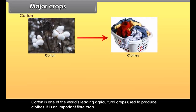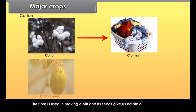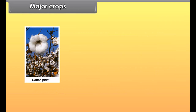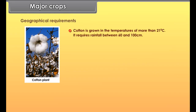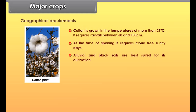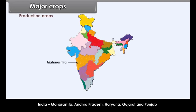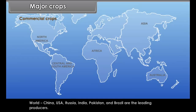Cotton is an important fiber crop. The fiber is used in making cloth and its seeds give us edible oil. Geographically, cotton is grown in temperatures of more than 21 degrees Celsius and requires rainfall between 60 and 100 cm. At the time of ripening, it requires cloud-free sunny days. Alluvial and black soils are best suited for its cultivation. Production areas in India include Maharashtra, Andhra Pradesh, Haryana, Gujarat and Punjab. World leading producers are China, USA, Russia, India, Pakistan and Brazil.